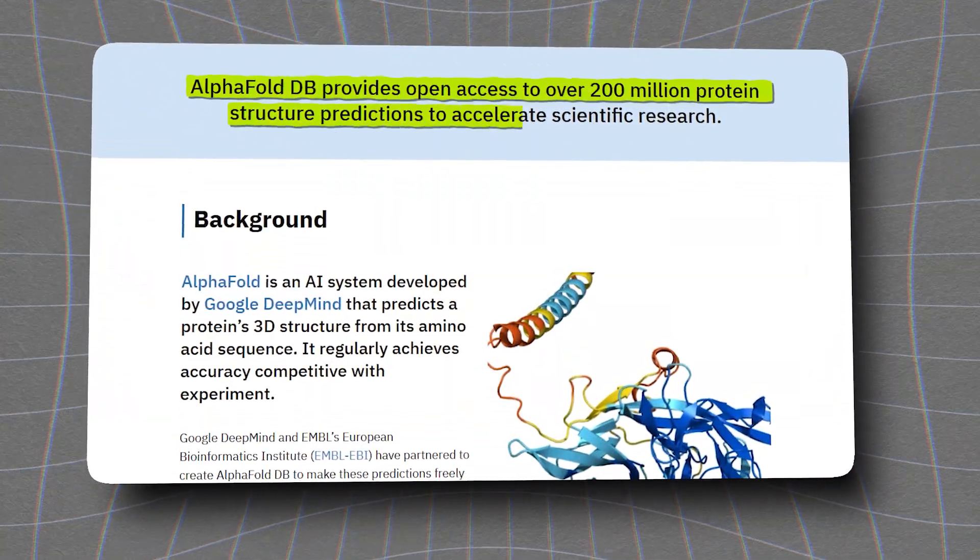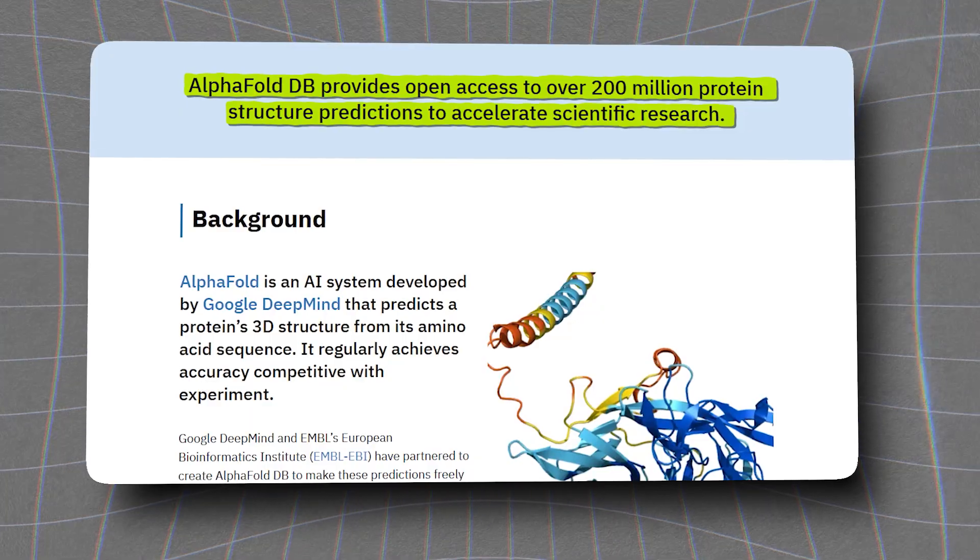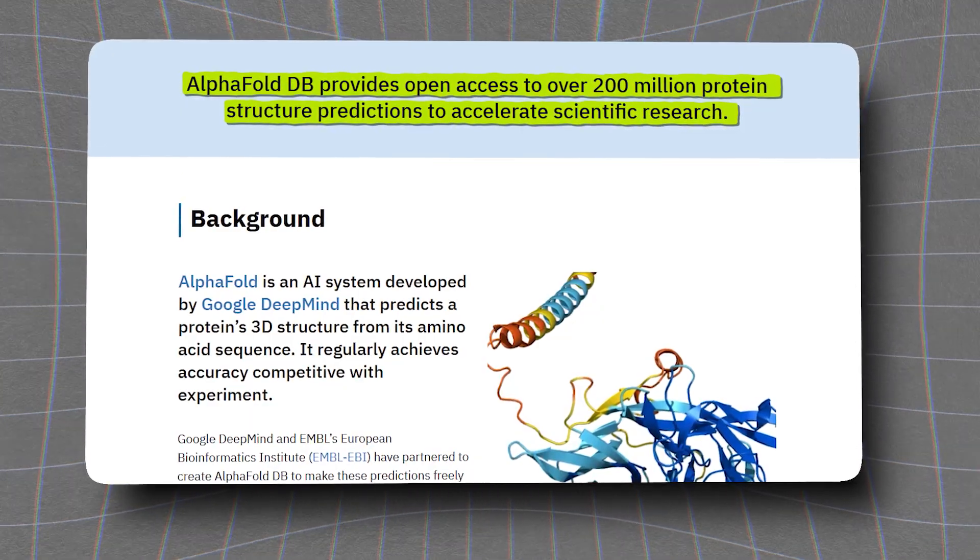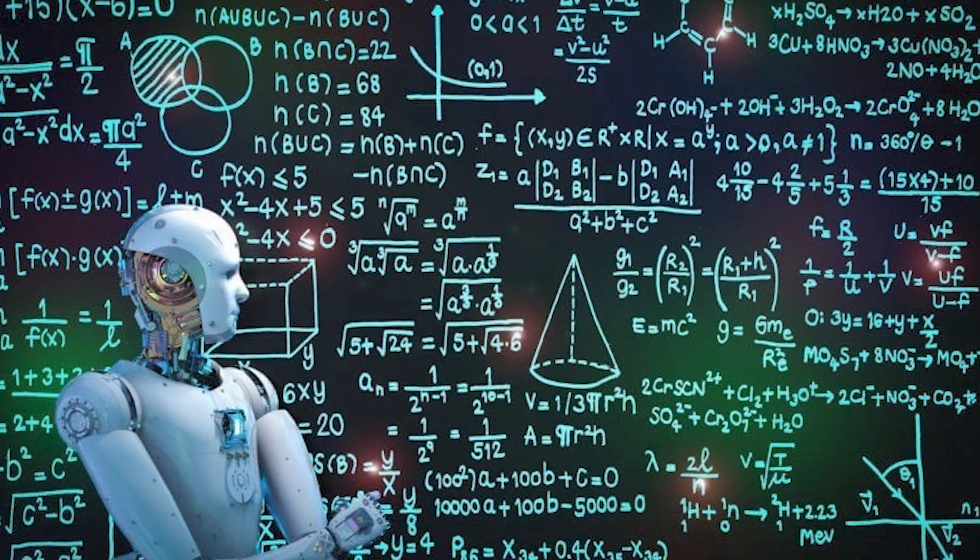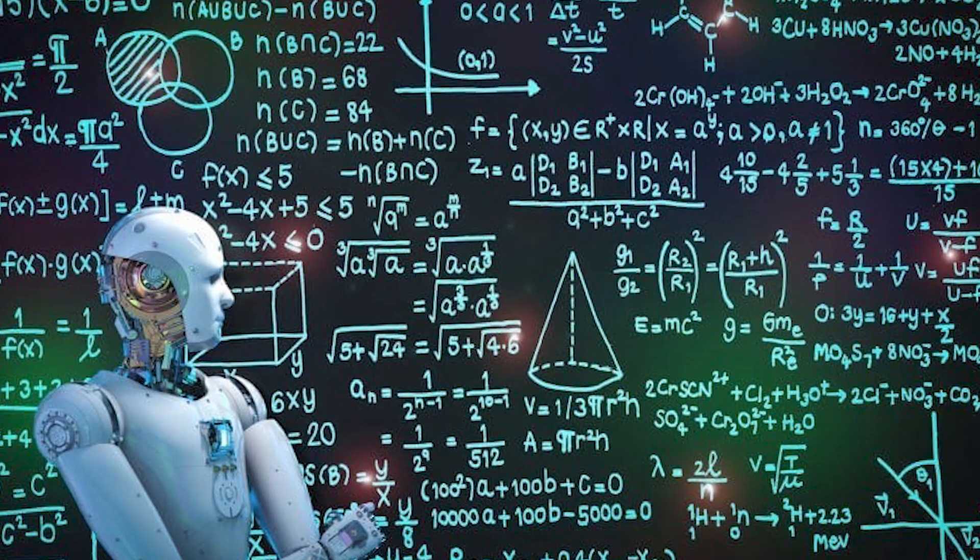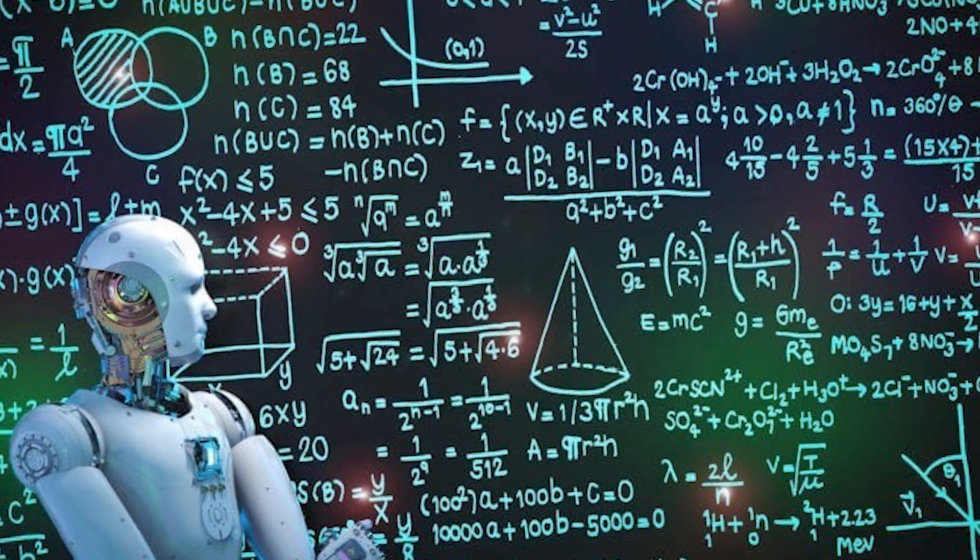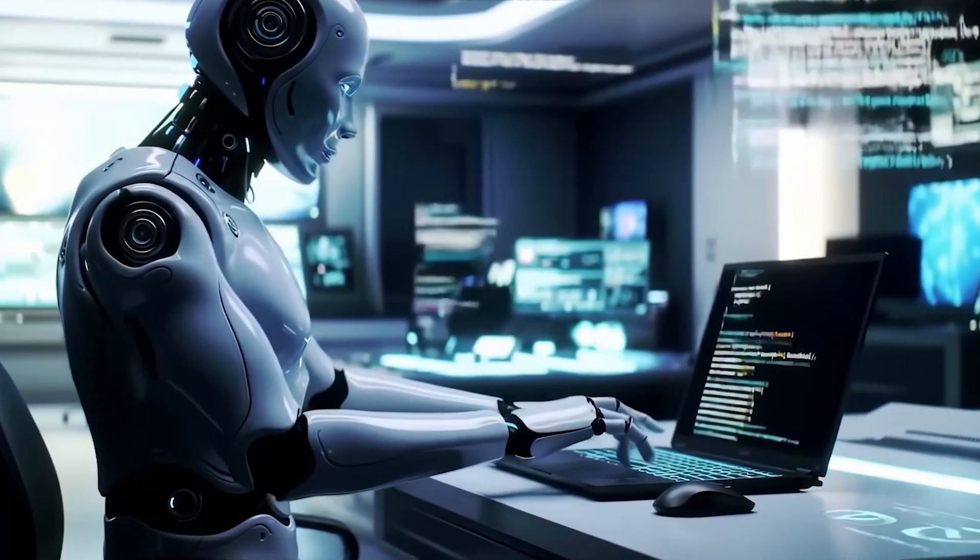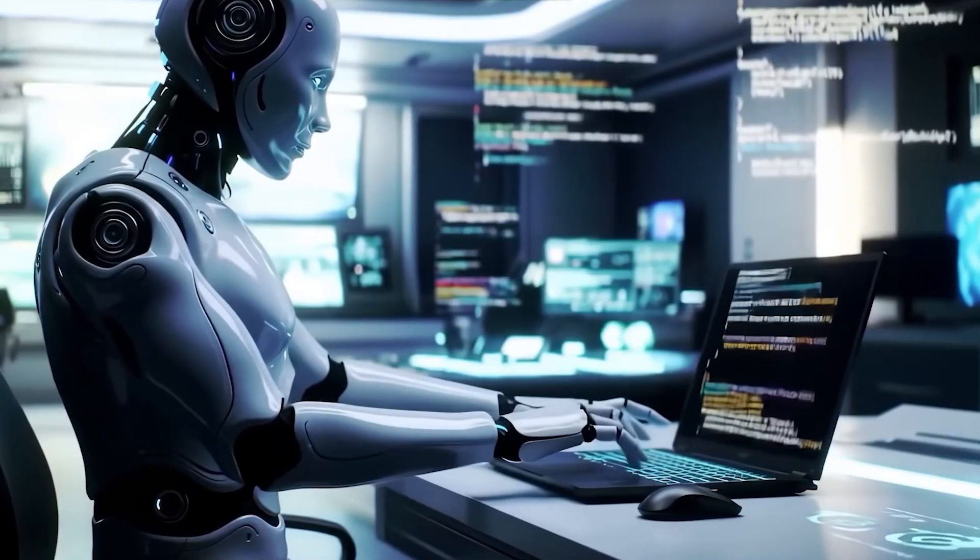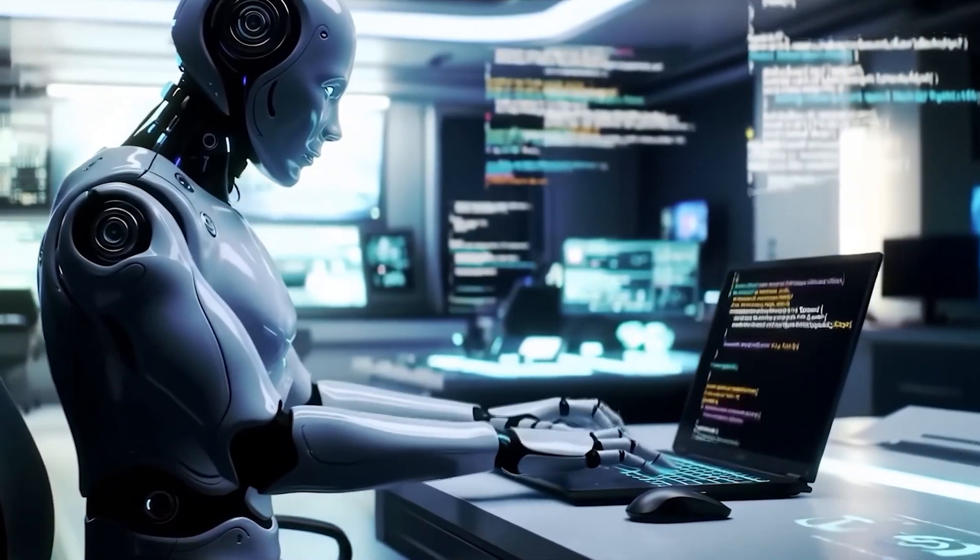When AlphaFold predicts protein structures, it can't explain its reasoning in terms humans can follow. When AI discovers new mathematical relationships, it can't walk us through its thought process. When these systems solve complex problems, they're operating in ways that are fundamentally alien to human thinking.